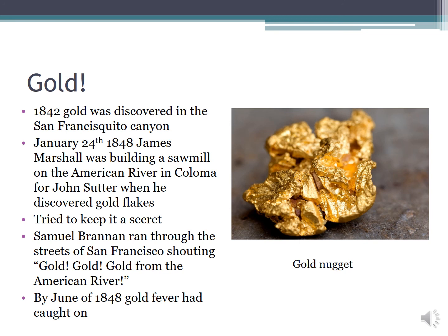They tried to keep the gold secret, but a man named Samuel Brannan, a Mormon who had come to California with a group of Mormon settlers, decided to use this as an opportunity to make money. He ran through the streets of San Francisco shouting 'Gold! Gold from the American River!' and set up a shop selling tools necessary for mining gold. He actually became one of the richest men in California as a result of his quick thinking. By June of 1848, gold fever had caught on and people were talking about gold in California as far away as Europe, Chile, and China — earning California a reputation not just as a place of economic opportunity but as a place where you might get very, very rich.